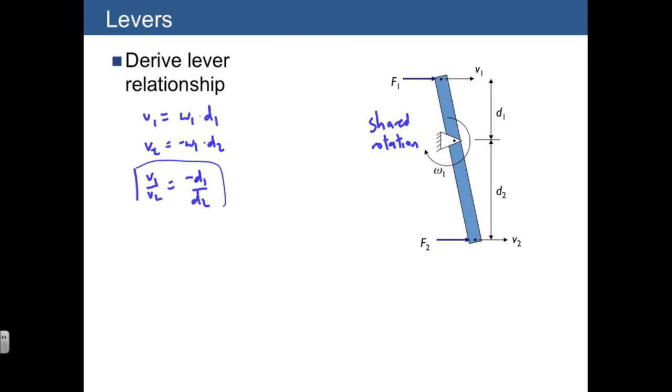So that's one of our relationships. The other relationship we can make is, again, summing the torques on the lever. And what that gives us is F1 times D1 minus F2 times D2 is equal to J times omega-1, where J is the moment of inertia of the lever. And again, this is often zero. We'll tell you when it's not zero, and otherwise you can just assume that the lever has zero mass.